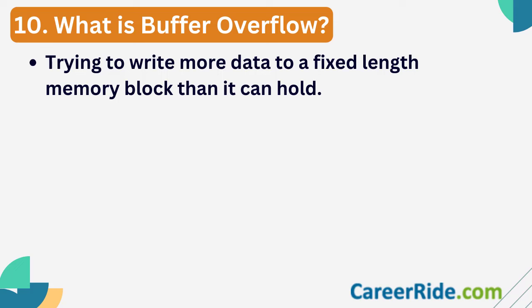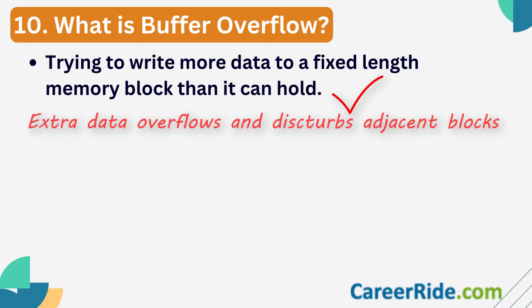Question ten: What is buffer overflow? Buffer overflow occurs when a programmer process tries to write more data to a fixed-length memory block than it is actually allocated to hold. All the extra data overflows and overwrites the data stored in adjacent memory addresses. To avoid this, sufficient bound checking is done so that the system can flag or discard the extra data sent to the memory buffer.